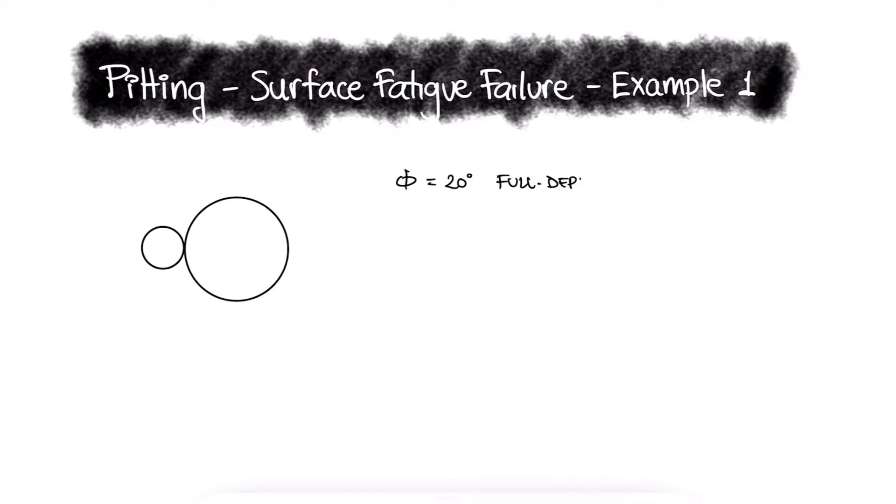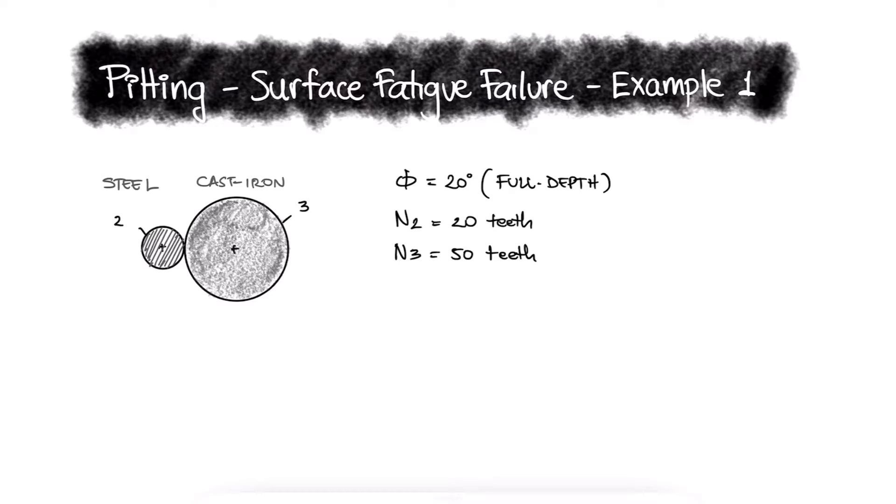A speed reducer has 20 degrees full depth teeth and consists of a 20 tooth steel spur pinion driving a 50 tooth cast iron gear. The horsepower transmitted is 12 at a pinion speed of 1200 revolutions per minute. For a diametral pitch of 8 teeth per inch and a face width of 1.5 inches, what would the contact stress be?